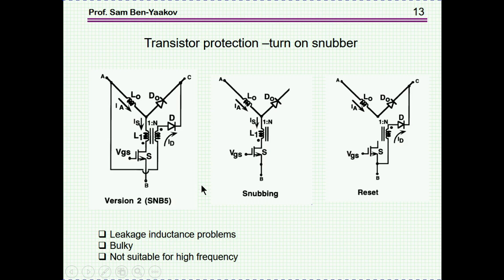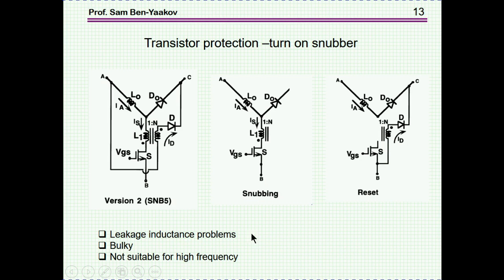Another issue is the peak current flowing through the diode, which might damage the transistor if it is too high. To damp it out or lower it, you can put an inductor which increases the impedance and lowers the rate of dI/dt, so the peak reverse current will be lower. However, there is energy now stored in this inductor, so this is actually a flyback type of arrangement where this energy is pumped back either to the output or to the input depending on the topology. Unfortunately, there are some leakage inductance issues between primary and secondary which by themselves cause some problems. This solution is bulky and really not suitable for high frequency — maybe up to 50–100 kilohertz; above that you lose more than you actually gain.